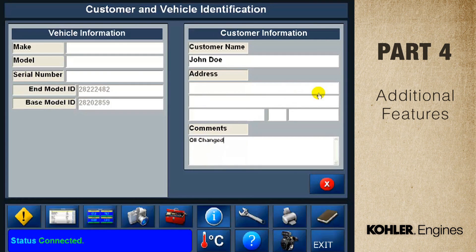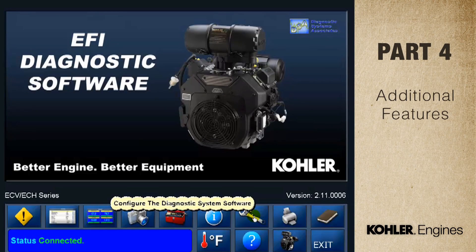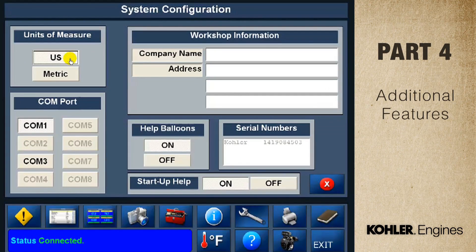To capture the information, print the screen — otherwise the information will disappear. The next function is the system configuration screen. The configuration screen is used to set the units of measure, workshop information, and communication port or COM port settings. Find more information on this in the user manual or help menu.